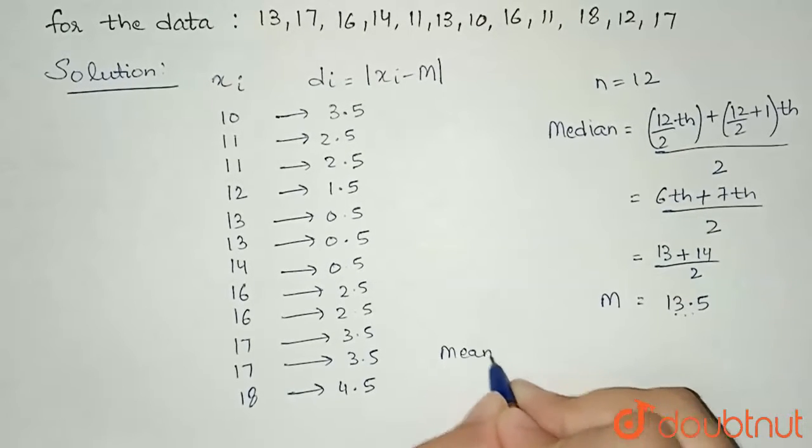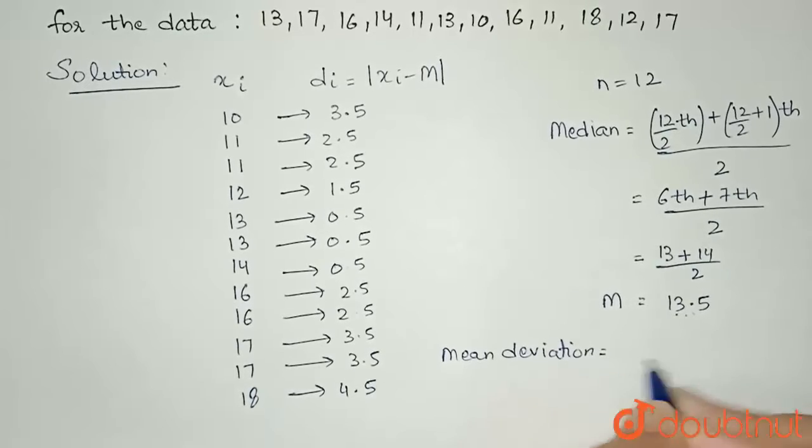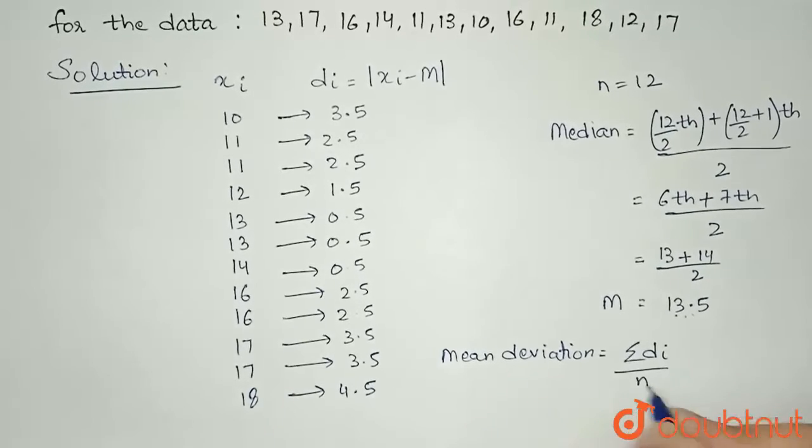Now we are asked mean deviation about median. So I can write that mean deviation equals, we have a formula for mean deviation as summation of di divided by n.